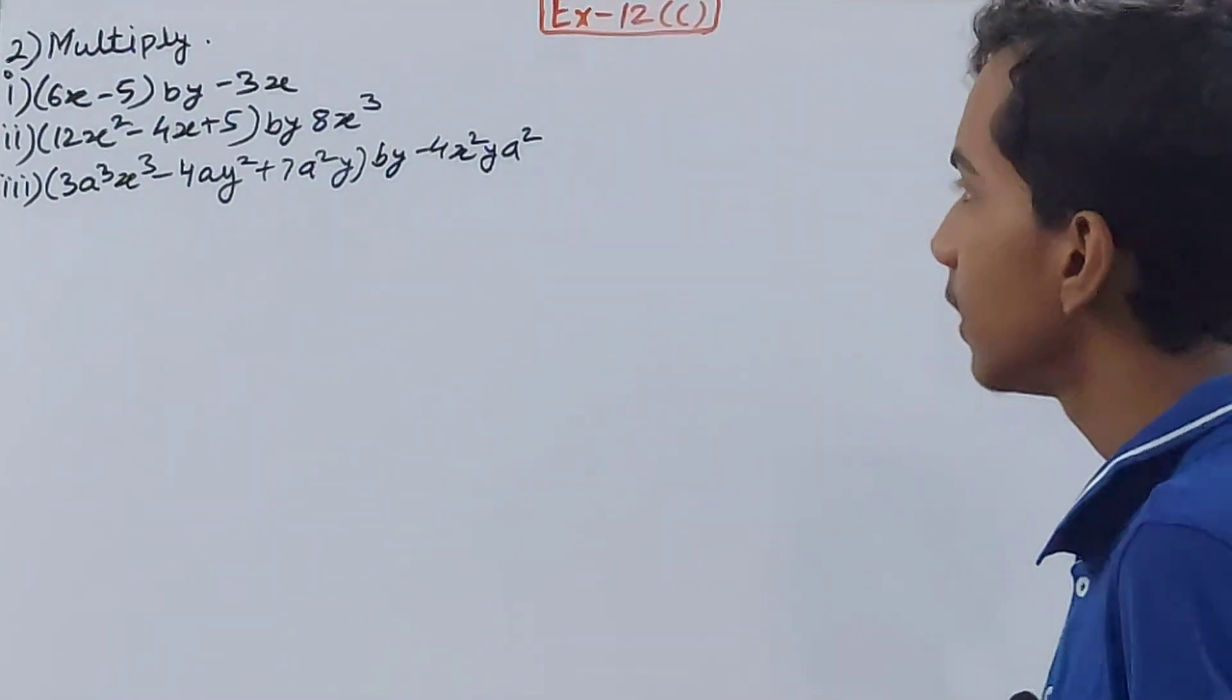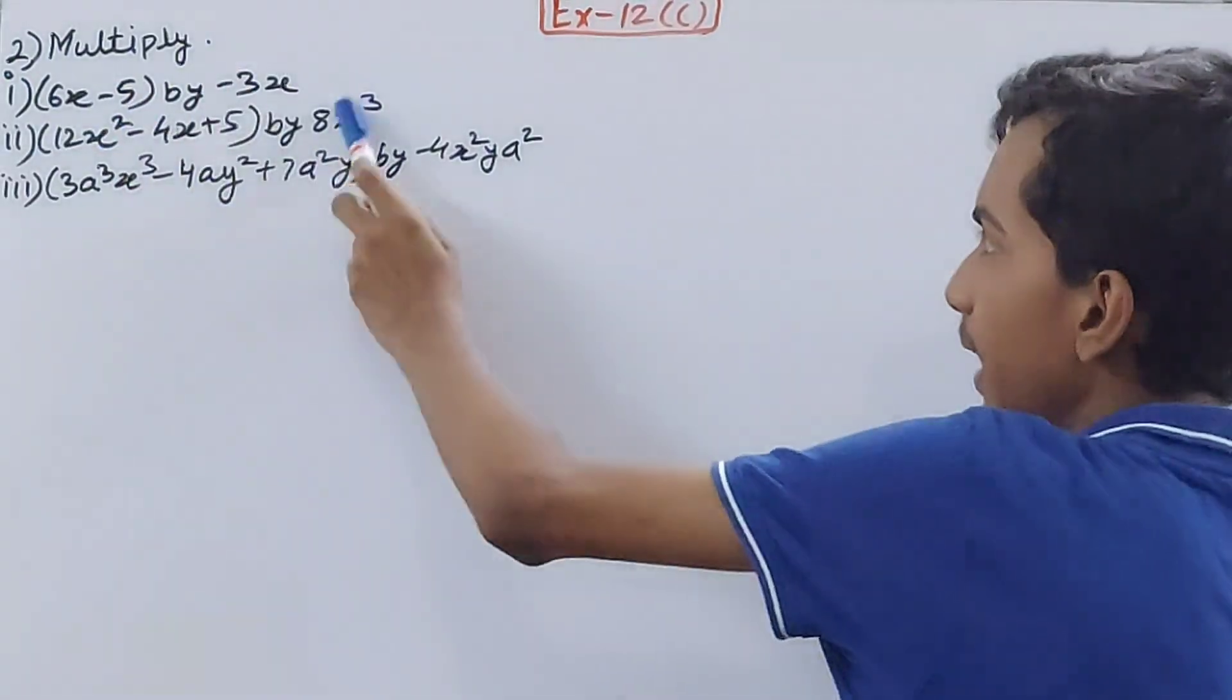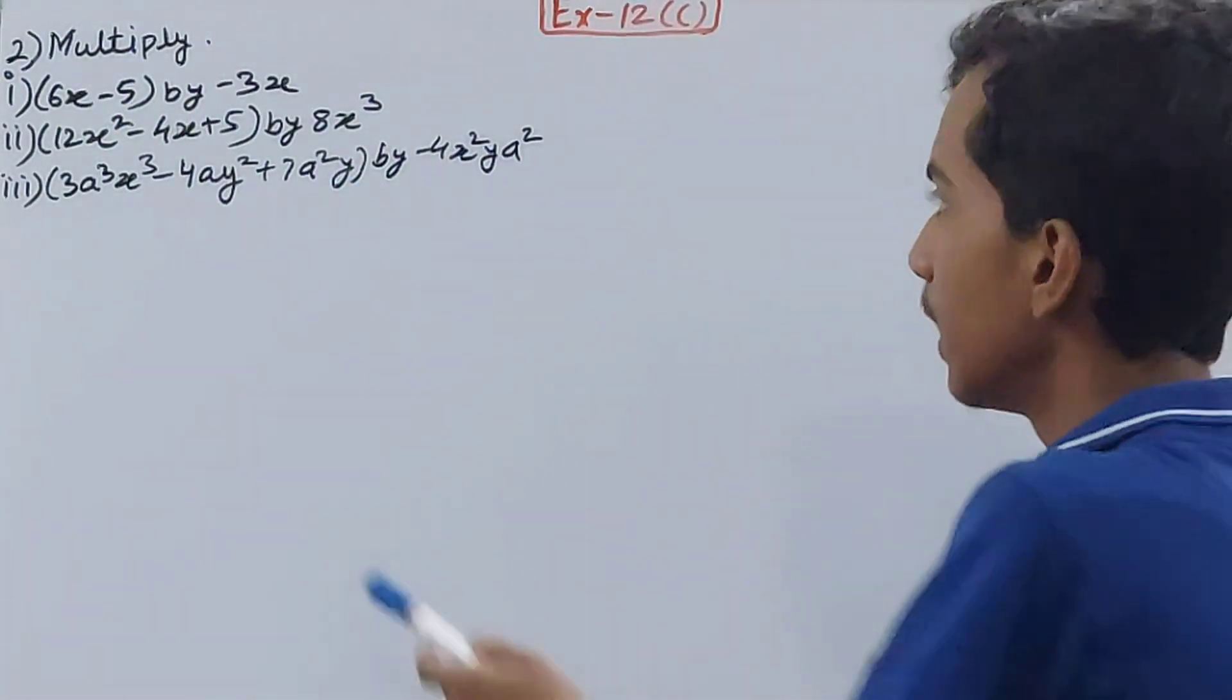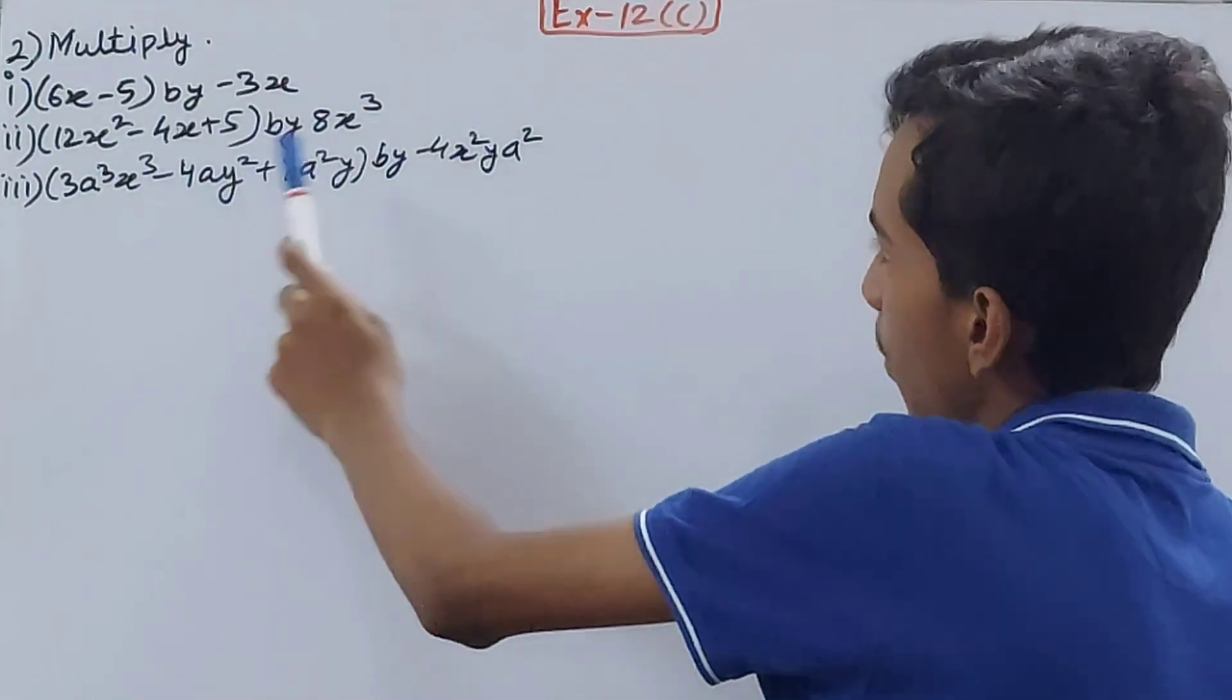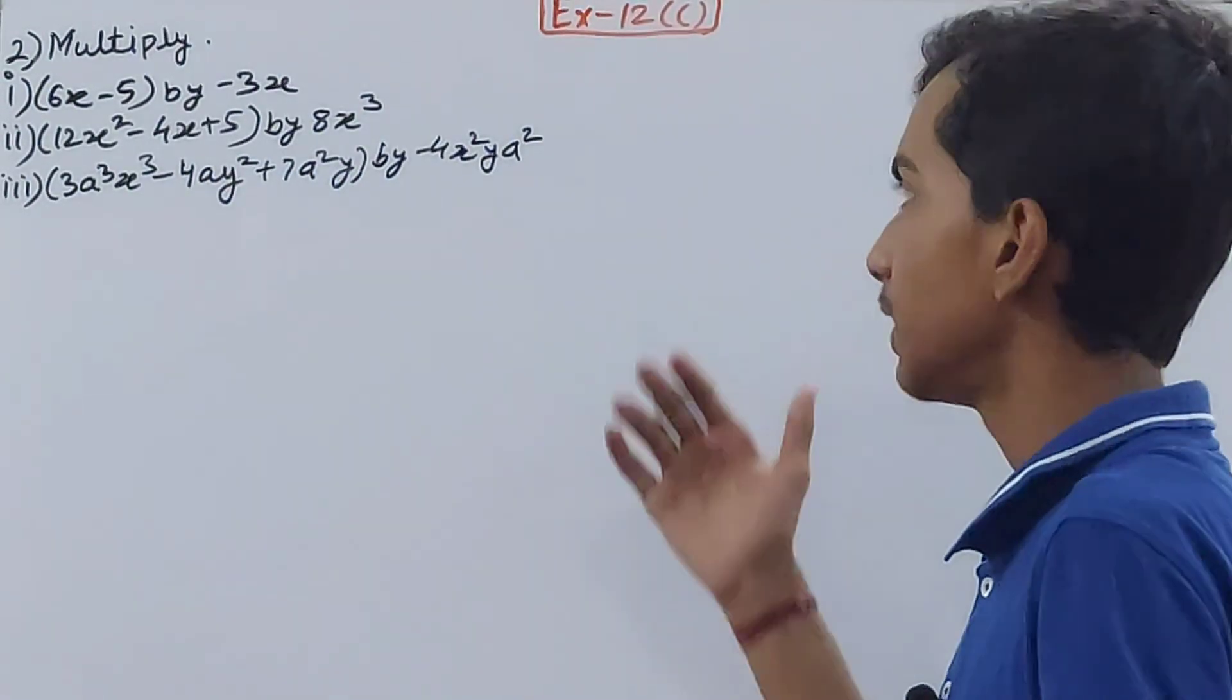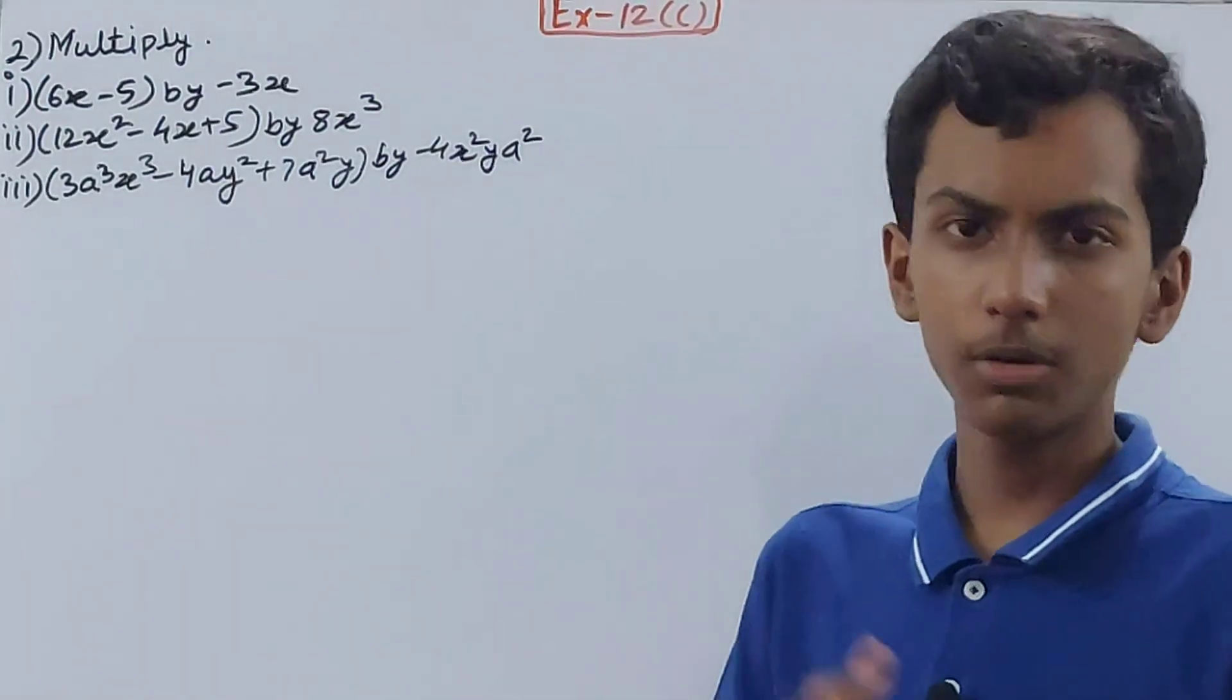Here you have to multiply, but what's different is you have to multiply a binomial by a monomial, and here a trinomial by a monomial. The number of terms has increased from the previous part where we were multiplying monomials by monomials only.